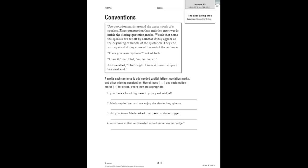So you are going to practice this on page 311 in your reader's notebook. You're going to rewrite each of these four sentences to add needed capital letters, quotation marks, and other missing punctuation. You're going to use ellipses and exclamation marks for effect where they are appropriate. Let's do the first one together.